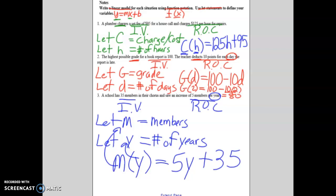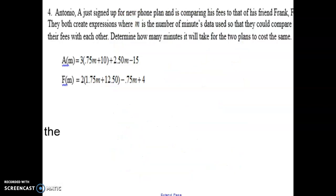Hope this is making more sense. If not, please let me know. We could talk about it in class. So now let's use all this information to help us solve something. Let's say that Antonio A, his function is labeled A, just signed up for a new cell phone plan and is comparing his fees to his friend Frank, who is letter F.